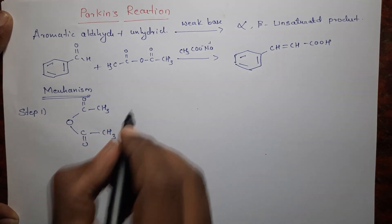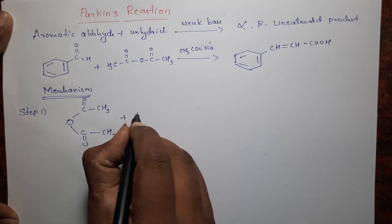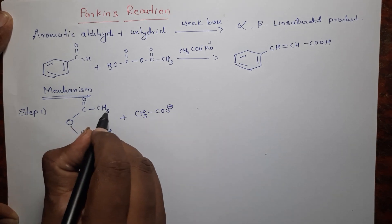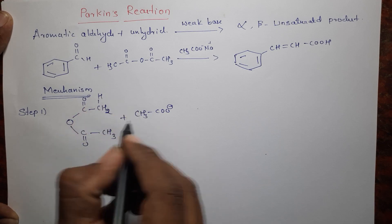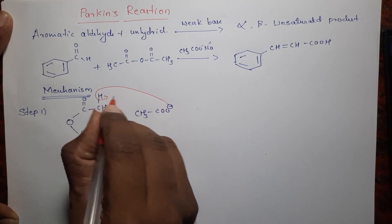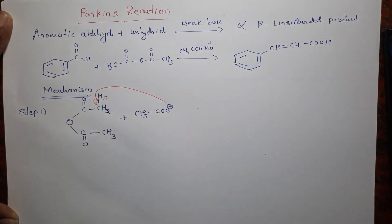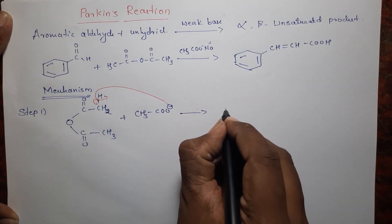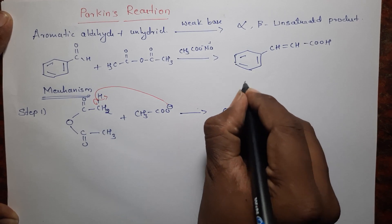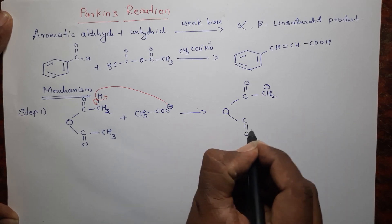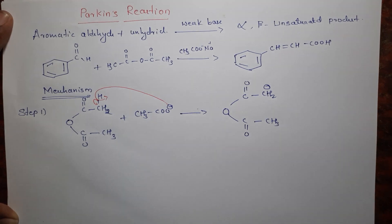This is the acidic anhydride — it reacts with the base. The base abstracts one proton from the alpha position. At that time, the bonds shift to the carbon to generate a carbanion, which gives a C=O, O, C⁻ species. This is the first step of Perkins reaction.